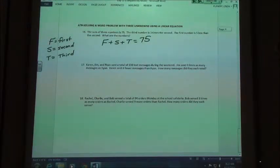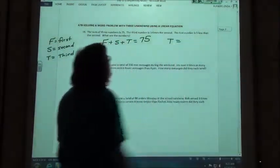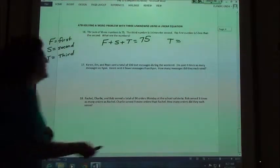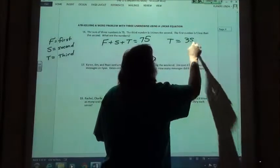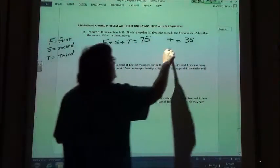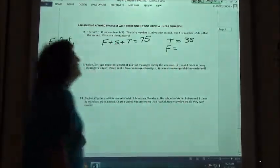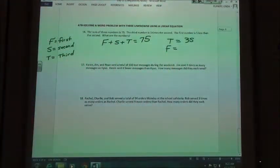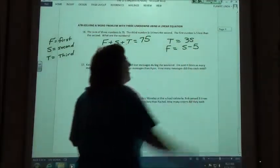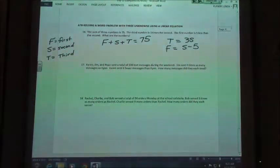The second sentence says the third number is three times the second. So the third number, T, is three times the second. How would I show that? Three S's. And then the third sentence says the first number is, so F equals five less than the second. How would I show five less than the second? S minus five. The second one minus five, if I'm doing five less than something, goes on the end.